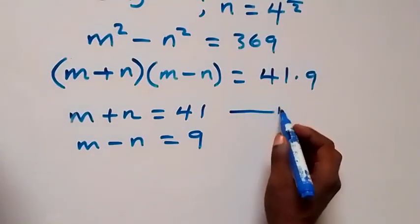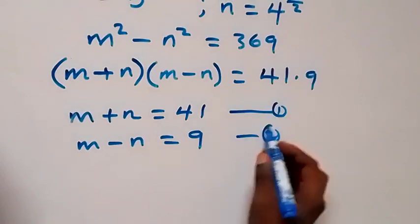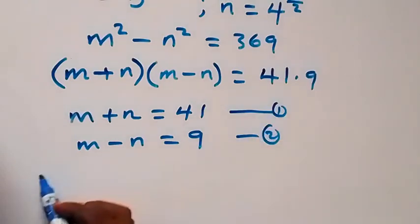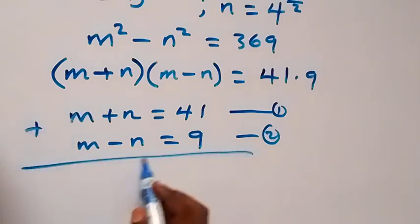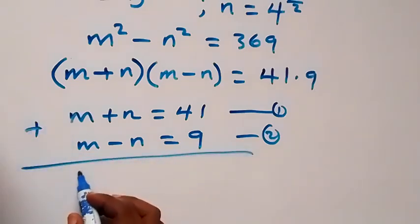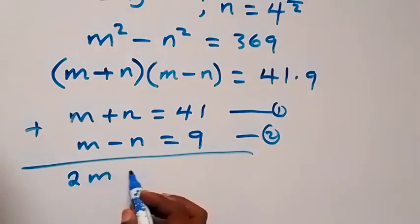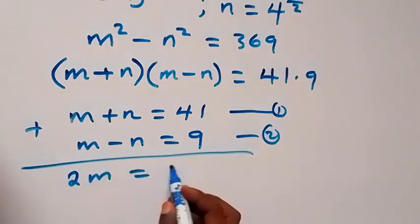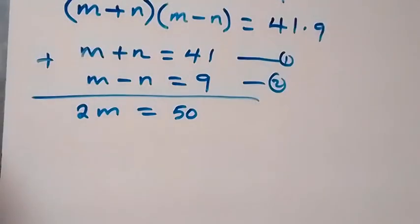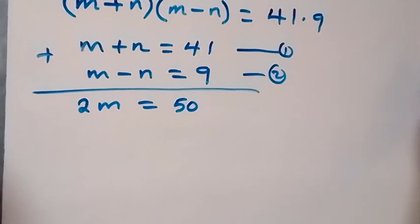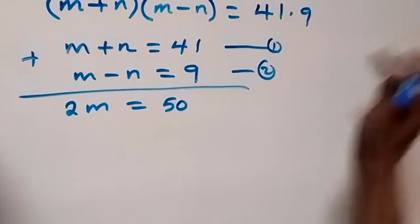Labeling these as equation 1 and equation 2, let's add the two equations together. We get 2m equals 50. Dividing both sides by 2, we have m equals 25.